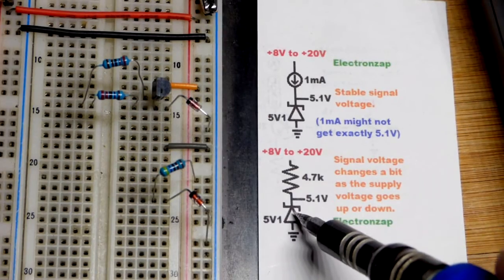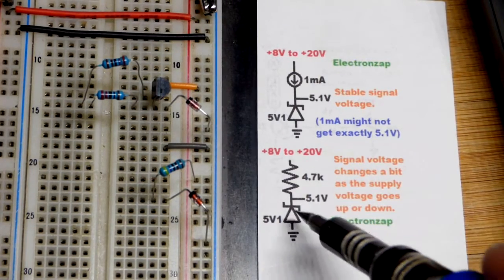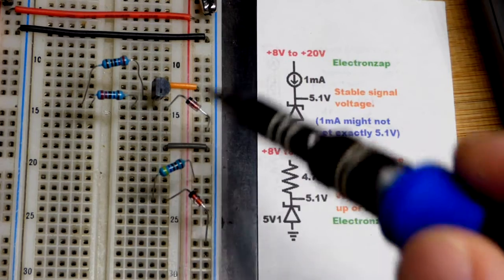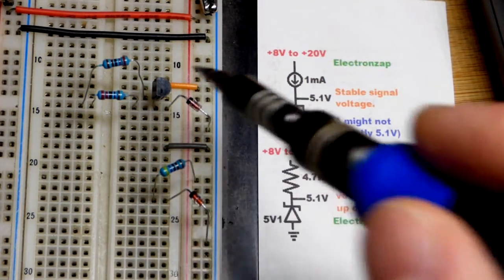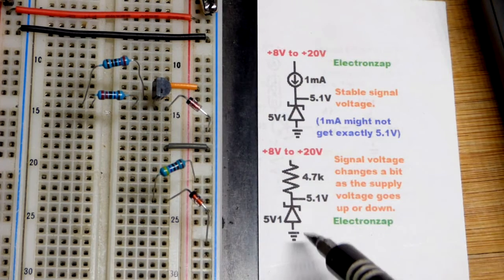In a recent video, we looked at the Zener diode. It has a property where it's reverse biased. You can see the black band towards the more positive side of the circuit. That's the cathode, the black band. The anode is the side without a band.